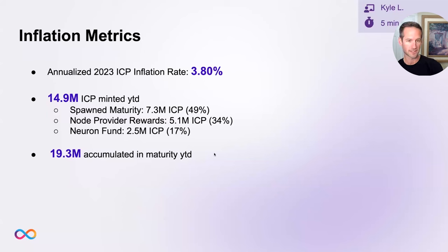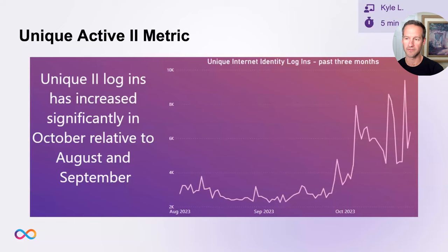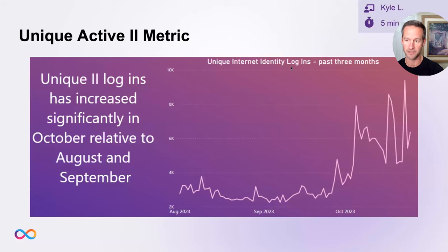Changing gears a little bit — I've been making the case in different forums about the fact that burn rate is really high already in October. Our cycle burn rate has set an all-time high for a month, and we still have another week to finish out this month. So the network activity on ICP is at an all-time high.